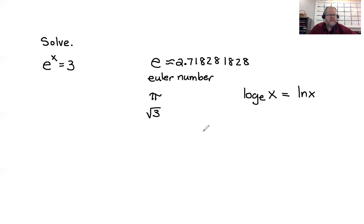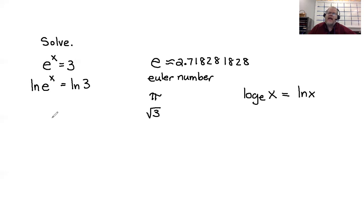If you ever see ln of x, what you're dealing with is log base e. To solve this equation, I'm going to take the natural logarithm of both sides: the natural logarithm of e to the x equals the natural logarithm of 3. Now I'm going to use the power property, which says the x can come down to the front, so now I have x times the natural logarithm of e equals the natural logarithm of 3.